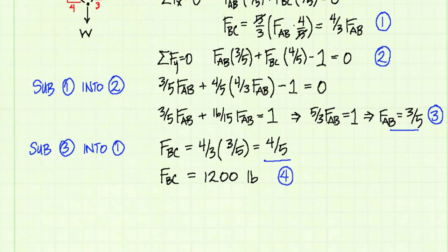So I write force BC is equal to 1200 pounds. I'm going to call that equation 4. Now I can scale up the force for AB by substituting the force of 1200 pounds for force BC into equation 1.